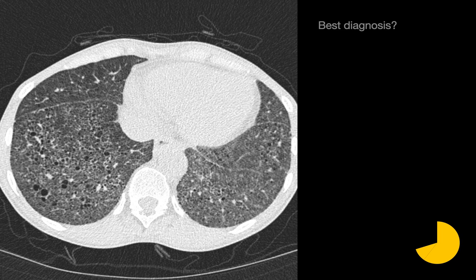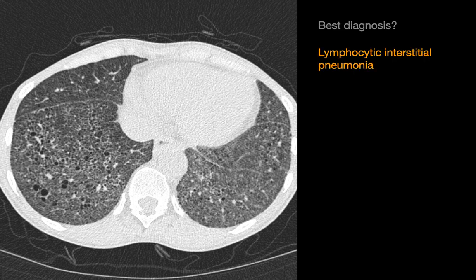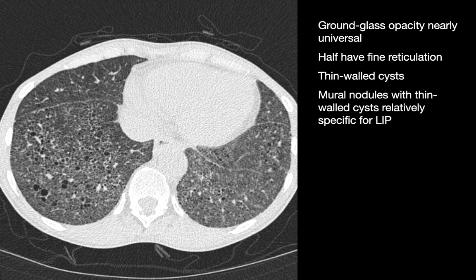What's your best diagnosis in this case? We see relatively diffuse ground glass opacities throughout the background of both lungs, lots of small thin-walled round cysts in the lungs, and a relatively diffuse reticular interstitial pattern. This combination of imaging features would be most likely encountered in the setting of lymphocytic interstitial pneumonia, or LIP. In LIP cases, ground glass opacities are nearly universal. Thin-walled cysts are the main feature, and about half of cases will exhibit fine reticulation. Mural nodules, when they occur along the walls of the air cysts, are a relatively specific feature for LIP.